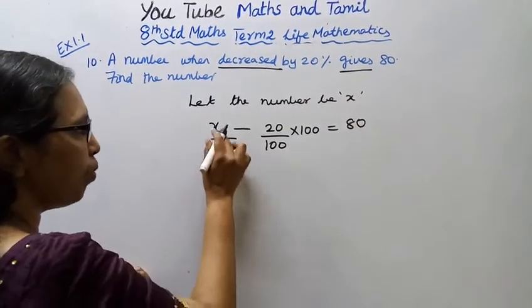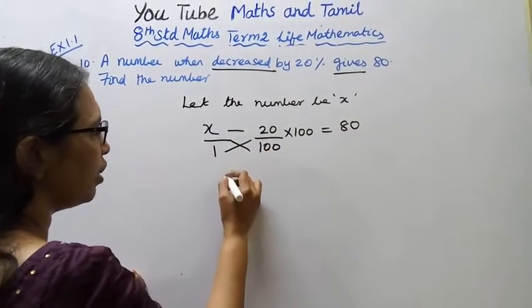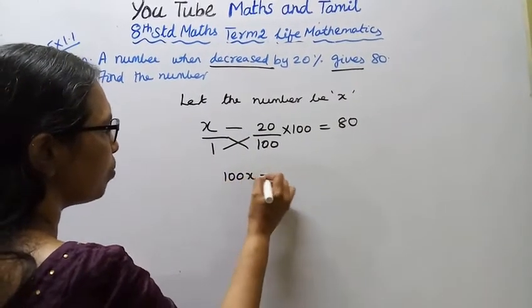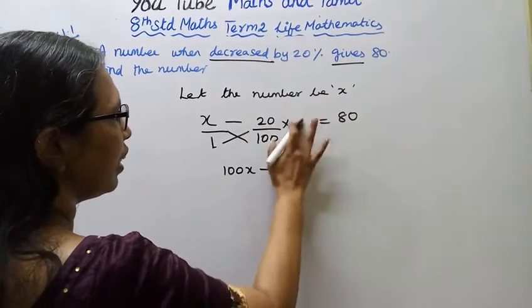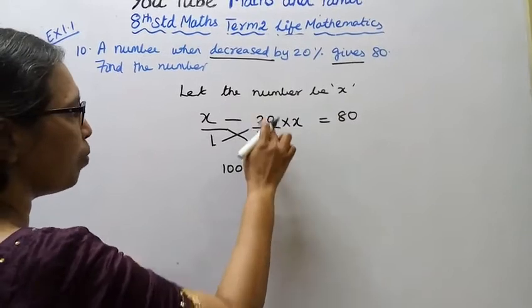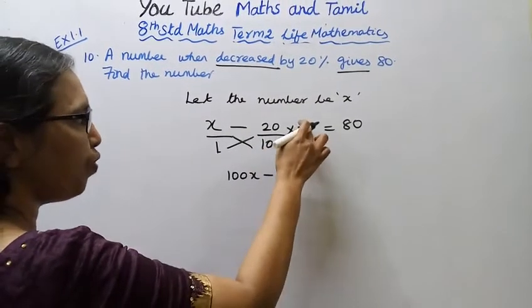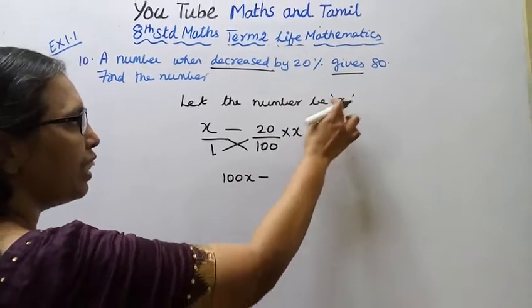The denominator is 1, so cross multiply. 100 into x is 100x, minus 1 into 20... sorry, it's 100 of that number. 100 into x is 100x, minus 20x over 100, equals 80.